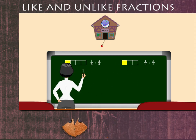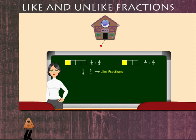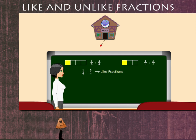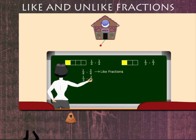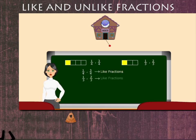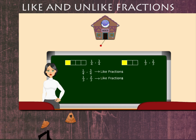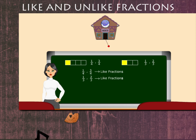One-fourth and three-fourths are like fractions, and one-third and two-thirds are also like fractions, because they have the same denominator.